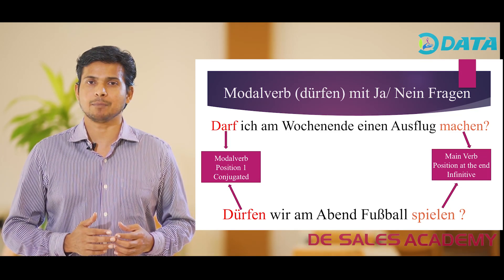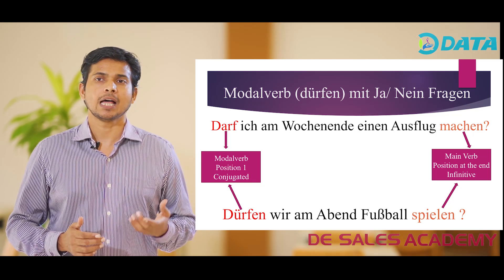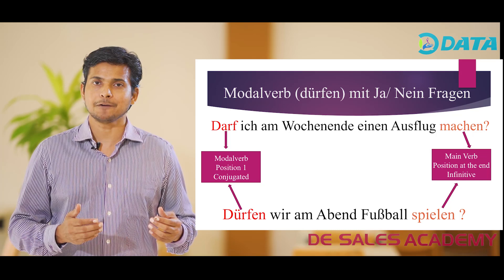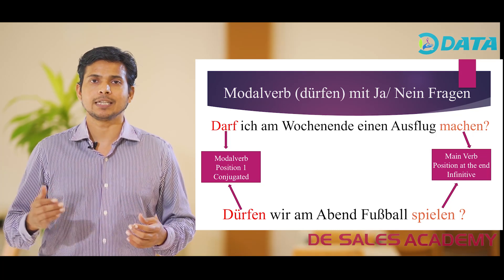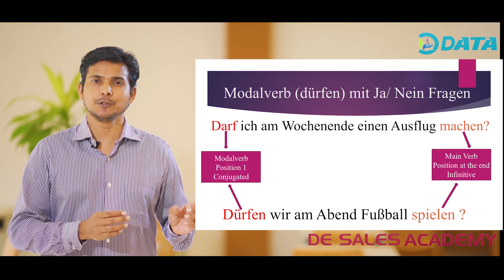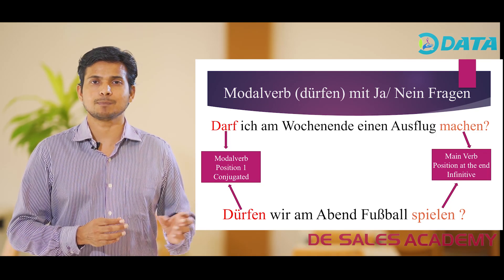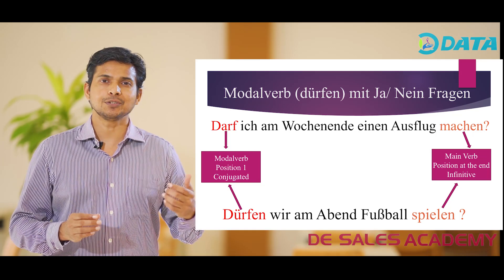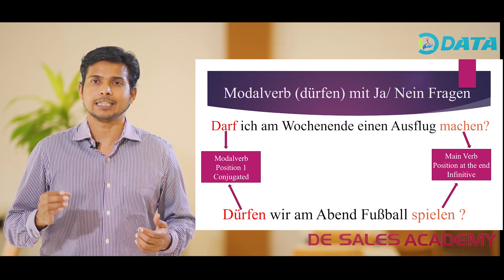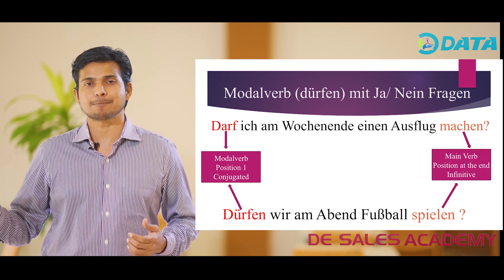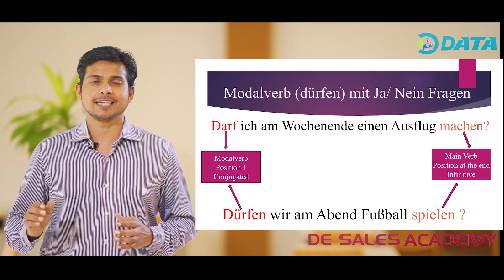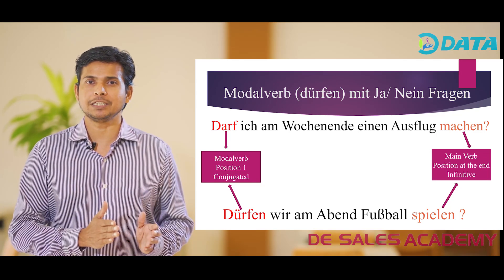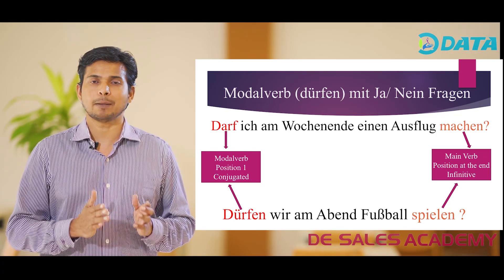The second example: Dürfen wir am Abend Fußball spielen? Are we allowed to play football in the evening? The modal verb Dürfen is placed in the first position, conjugated according to the subject wir, and the main verb spielen is placed at the end of the sentence in its infinitive form.